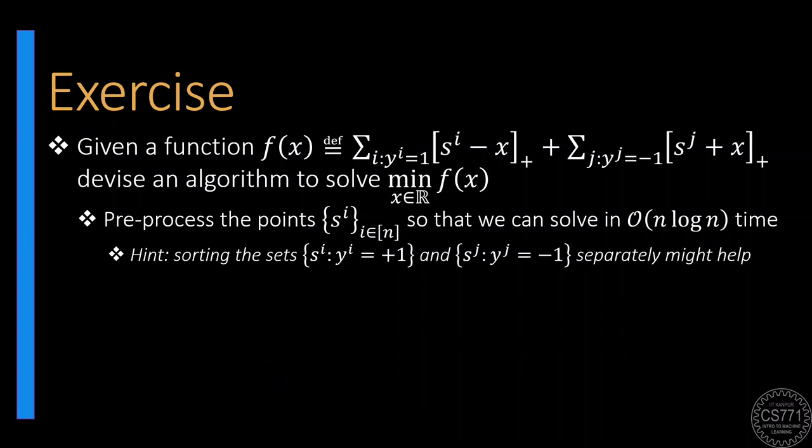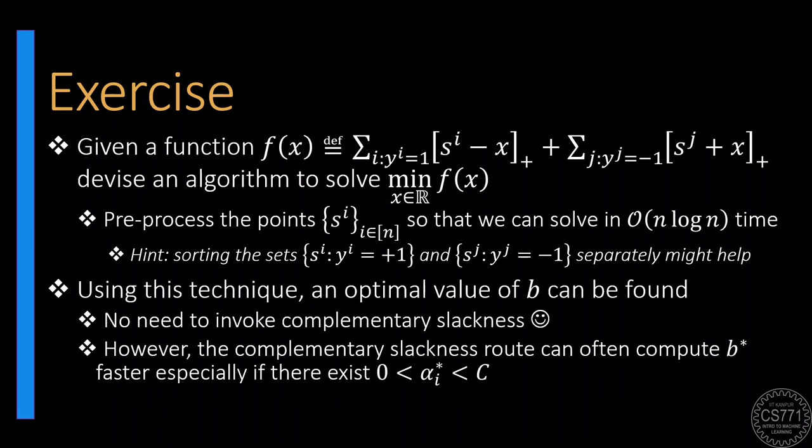After solving this exercise, you would be able to use your algorithm to find out the optimal value of the bias without using complementary slackness derivations.